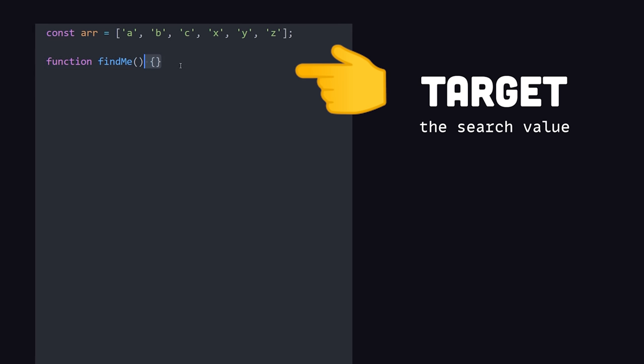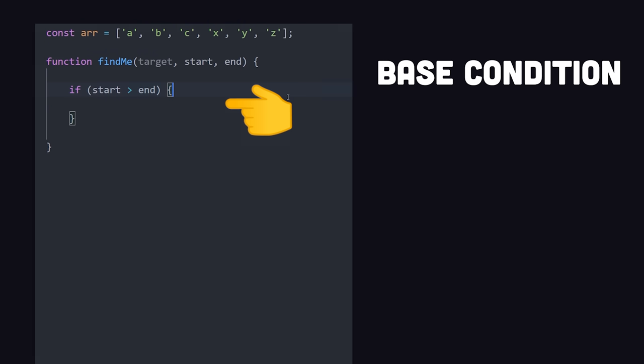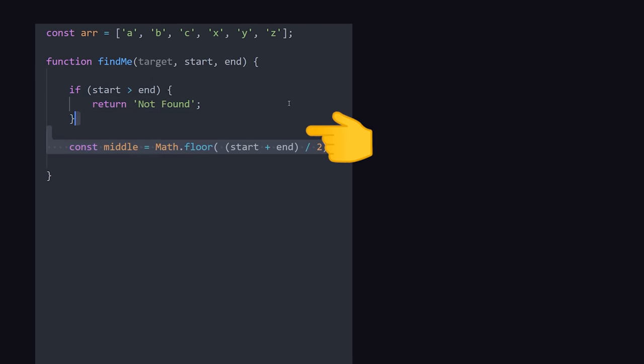The function takes the target value as an argument, as well as a starting and ending index. First, we have a base condition to stop looping when it reaches the end of the array. At which point, we know the target is not in the array.